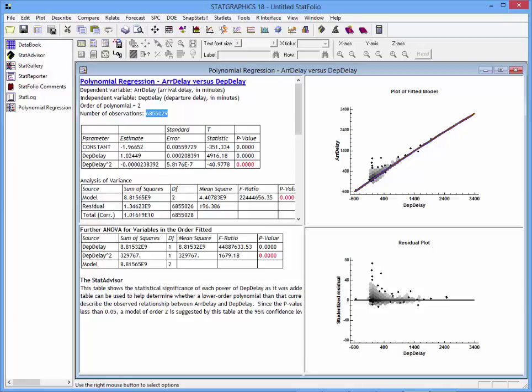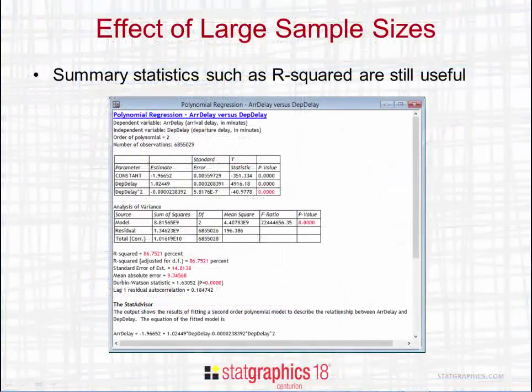As discussed in a different video, the XY scatter plots normally used to show the fitted model and the residuals have been replaced by hexagon plots because of the very large sample size. I want to take a closer look at some of the output, because when you're working with big data, some output is useful and some not so useful. One thing that is useful is the estimated model. Down at the bottom of the screen, the StatGraphics Advisor has plotted out the second order model which relates arrival delays to departure delays. That's still useful.